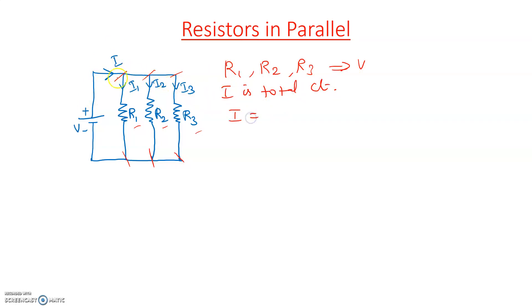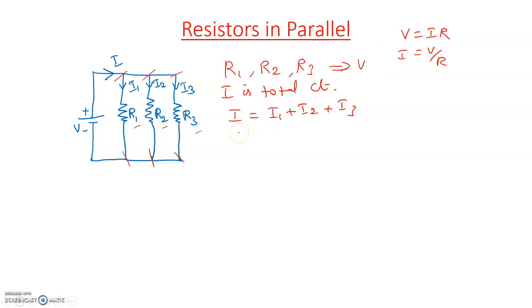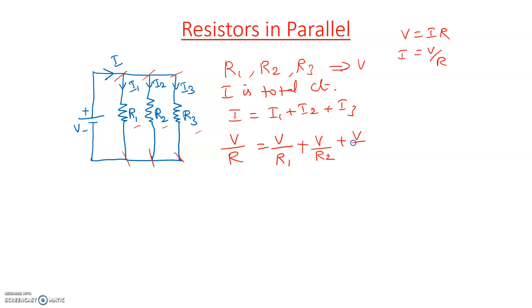The total current will be divided into three parts because there are three resistors in three branches. So I equals I1 plus I2 plus I3. According to Ohm's law, I equals V by R. The current through each branch: I1 equals V by R1, I2 equals V by R2, and I3 equals V by R3, since voltage across all branches is the same V.